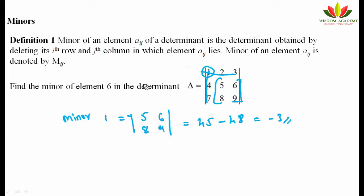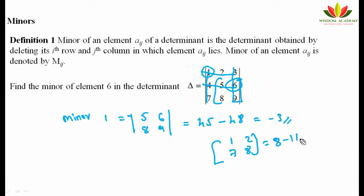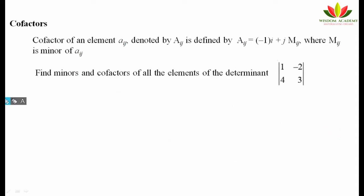Similarly, for minor of 6, leave the row and column associated with 6, and the remaining elements are [1,2; 7,8], giving determinant value 8 - 14 = -6. This is how you find the minor of each element.